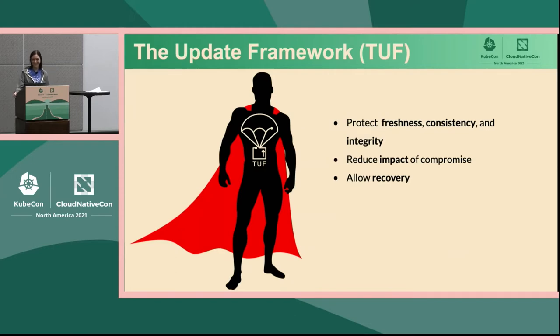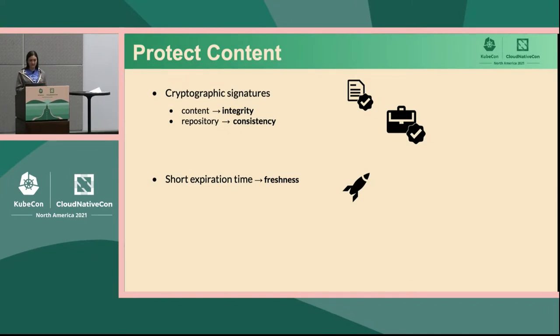So what can we do to prevent this? This is where the Update Framework, or TUF, comes in. It's a framework for secure software updates designed to protect the freshness, consistency, and integrity of packages. It does this while also reducing the impact of a compromise and allowing for recovery when a compromise does happen. TUF protects content by using cryptographic signatures in a couple of different places: signatures over the content itself to protect integrity, signatures over the entire repository index to protect consistency, and signatures over a kind of heartbeat with a short expiration time to prove freshness of the metadata and content — making sure you're not seeing old versions that may be malicious or non-intended.